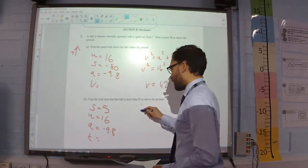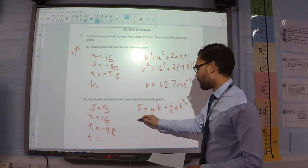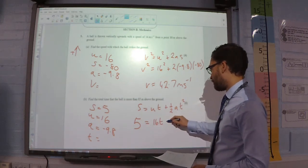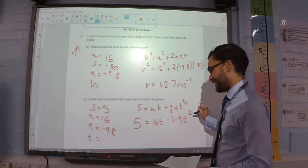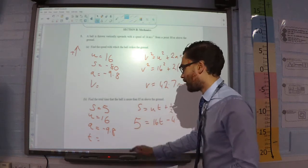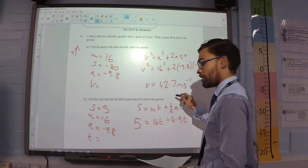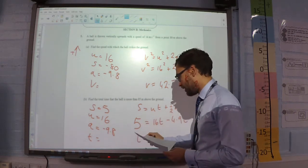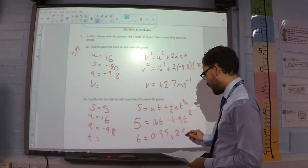So, s equals ut plus half at squared. So, 5 is equal to 16t minus 4.9t squared. We have a quadratic here. So, we're going to get two values out for time. The first value for time is that first time the ball reaches 85 meters. And the second value for time is going to be when it's on its way back down and it reaches 85 meters again. So, we would get two values for t if we solve that properly. And that would be 0.35 and 2.92.